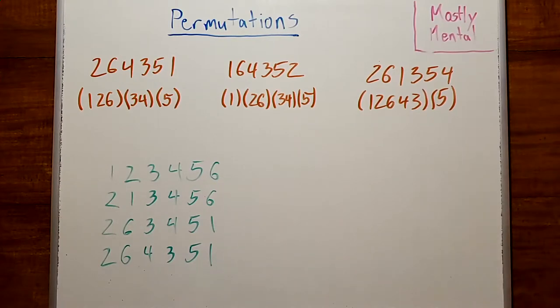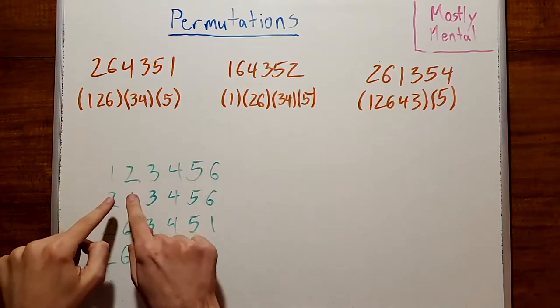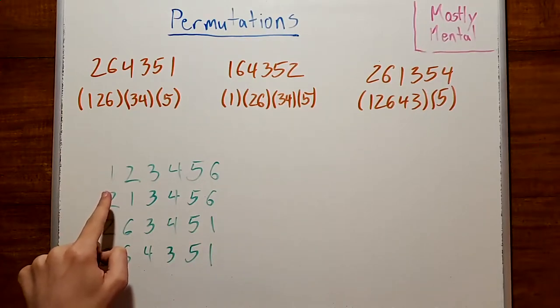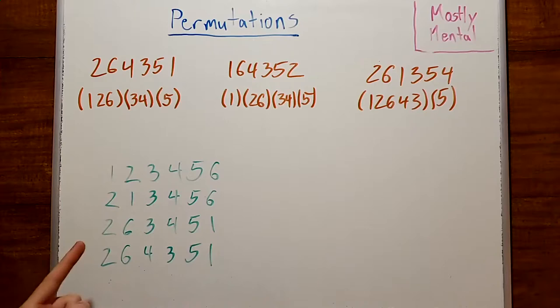But we could also do this a bunch of other ways. For instance, we could swap the 1 and the 2, and then the 1 and the 3, and then 1 and 4, 1 and 5, 1 and 6, to move the 1 from one end to the other. And then do the same thing for each of the other elements. Swap it one place at a time to get it from its starting position to its ending position. And if we do it that way, it's going to take us nine swaps.